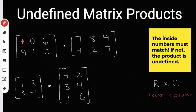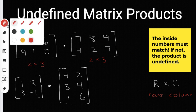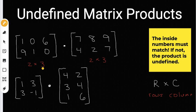For the first matrix, I see that it has two rows and three columns, so this is a two by three. For this matrix, it also has two rows and three columns, so this is also going to be a two by three. When you're multiplying, the inside numbers have to match up, because if they don't, the product is going to be undefined. The inside numbers are this three and this two, and since they don't match up, this product is going to be undefined.